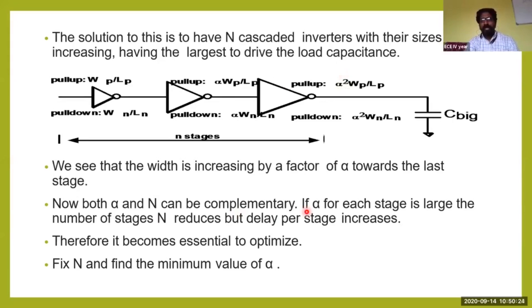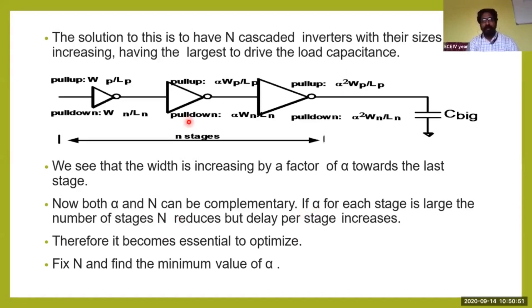If alpha per stage is large, the number of devices N reduces, but the delay per stage increases. We must carefully design how many inverters are used — only a limited number of inverters should be used to drive large capacitor loads. Therefore it becomes essential to optimize this: fix N and find the minimum value of alpha.